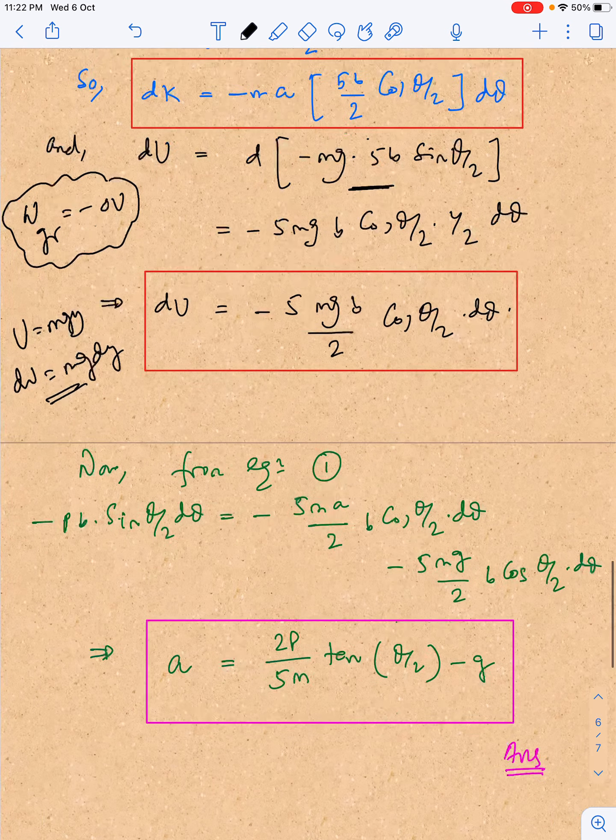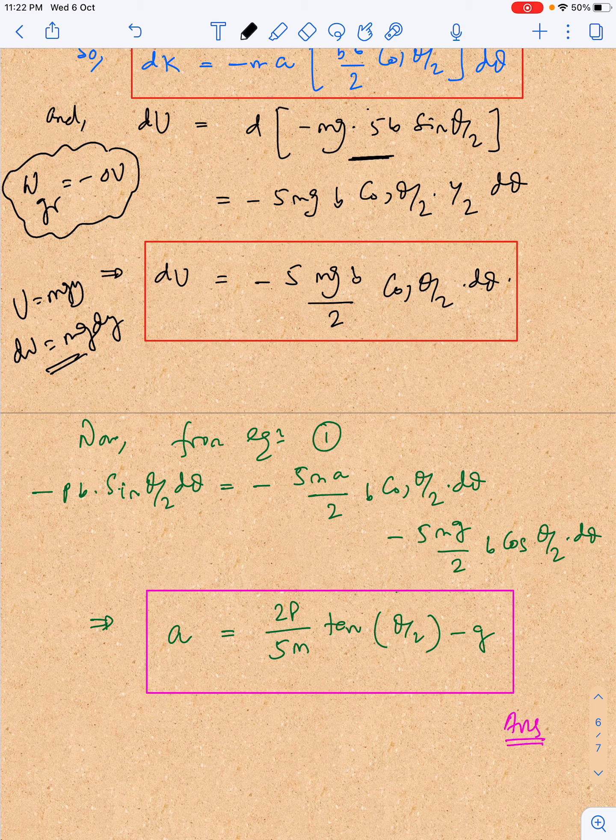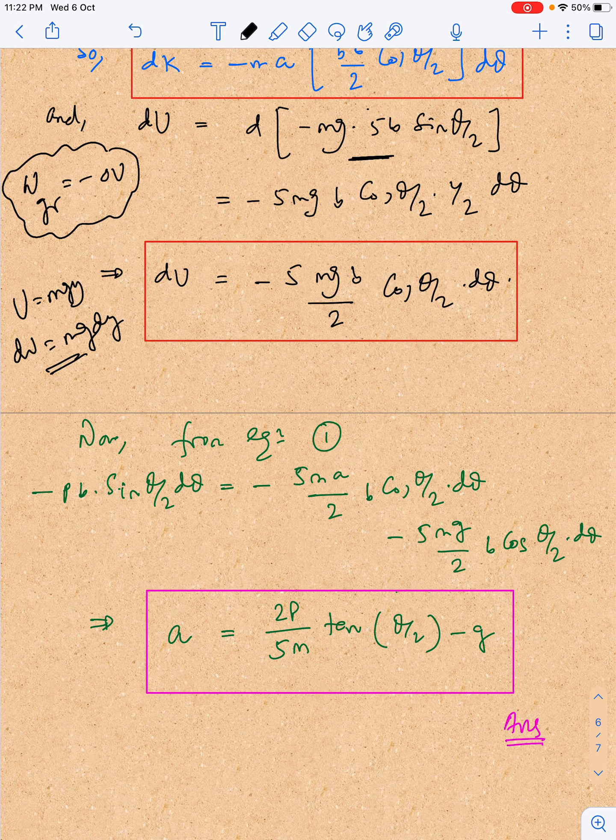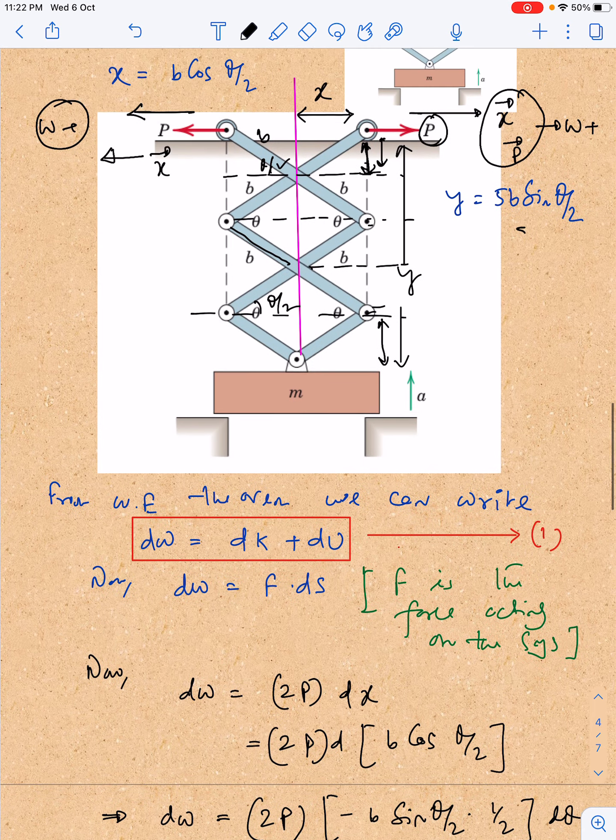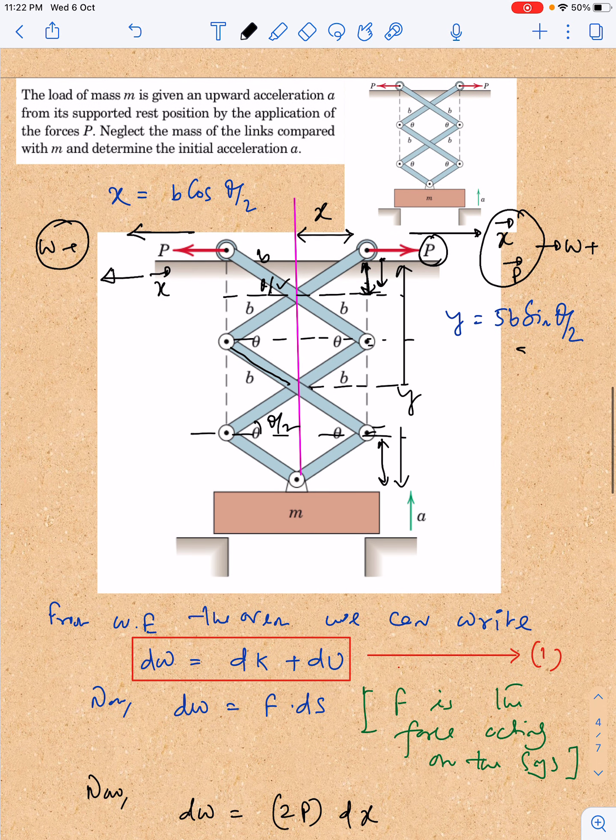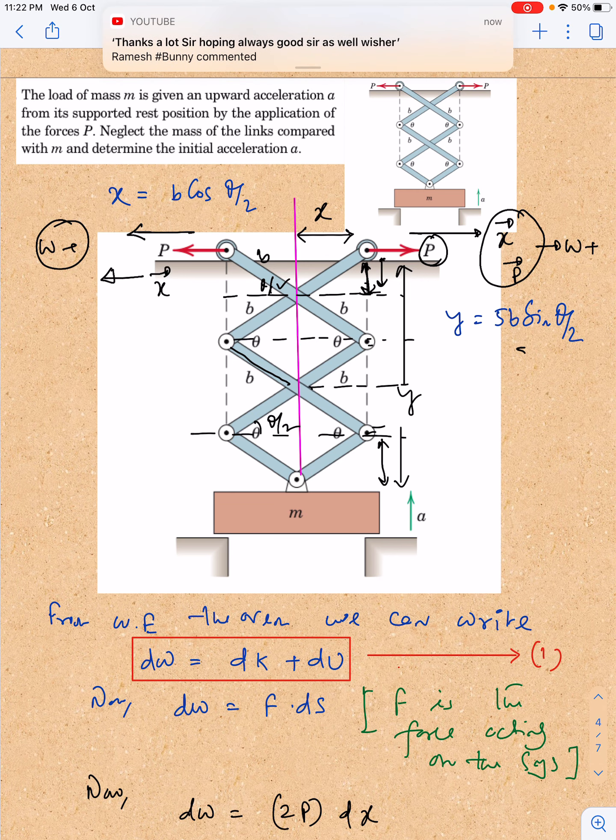The final answer will be a equals 2P by 5m tan theta by 2 minus g. So it is really a very good question, exactly of JE Advanced standard, where I have just modulated a typical constraint in rigid body question to a general question where we are revising many concepts like constraints in rigid bodies, work-energy theorem, and general dynamics.